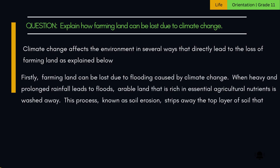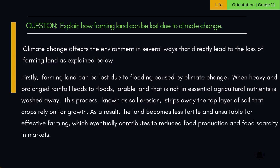Firstly, farming land can be lost due to flooding caused by climate change. When heavy and prolonged rainfall leads to floods, arable land that is rich in essential agricultural nutrients is washed away. This process, known as soil erosion, strips away the top layer of soil that crops rely on for growth. As a result, the land becomes less fertile and unsuitable for effective farming, which eventually contributes to reduced food production and food scarcity in markets.